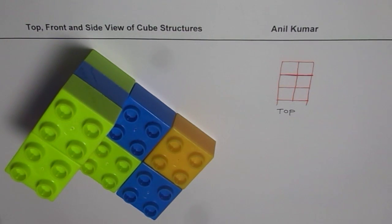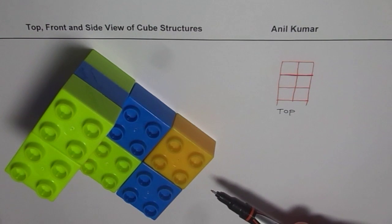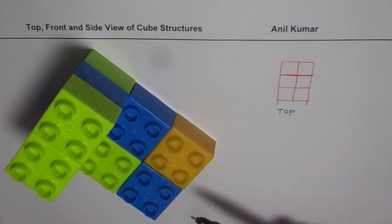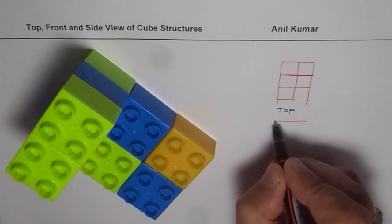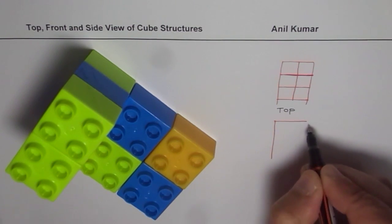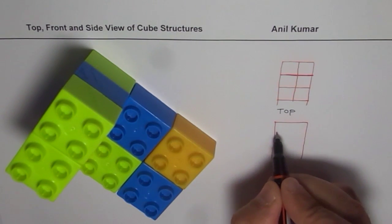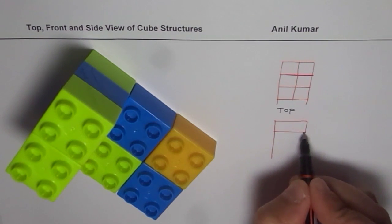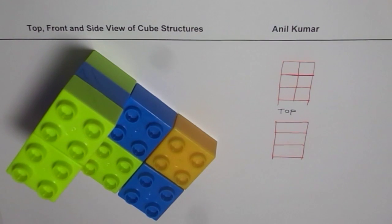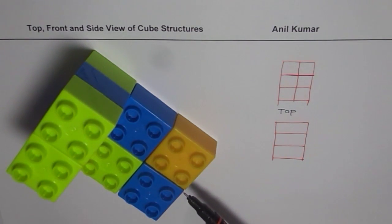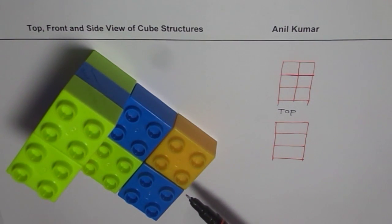Now let's make the front view. From the front you see three layers of these blocks — three layers of two each. Let me sketch it. It looks kind of similar to the top view, but there is one huge difference: at the first level you see a change in height.